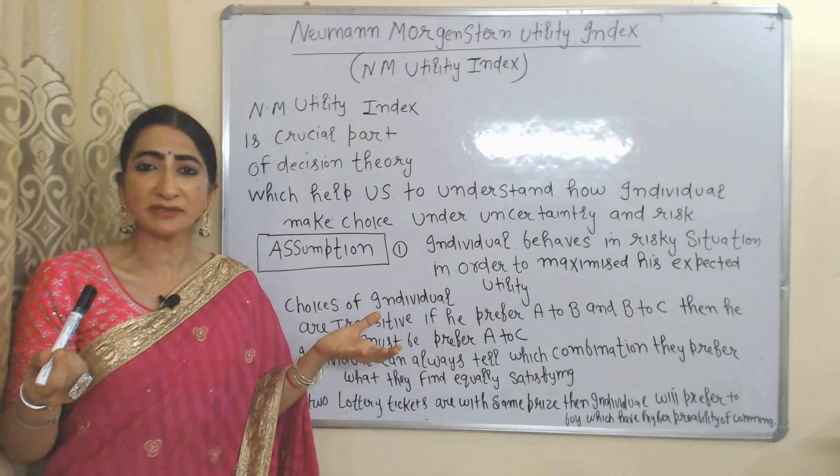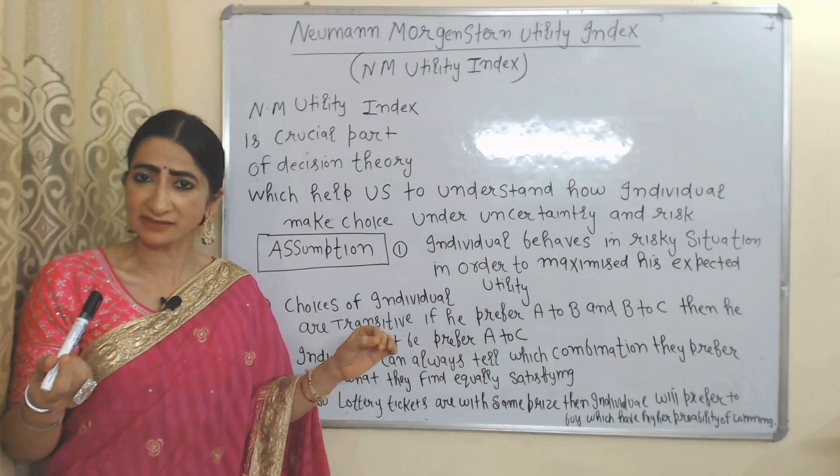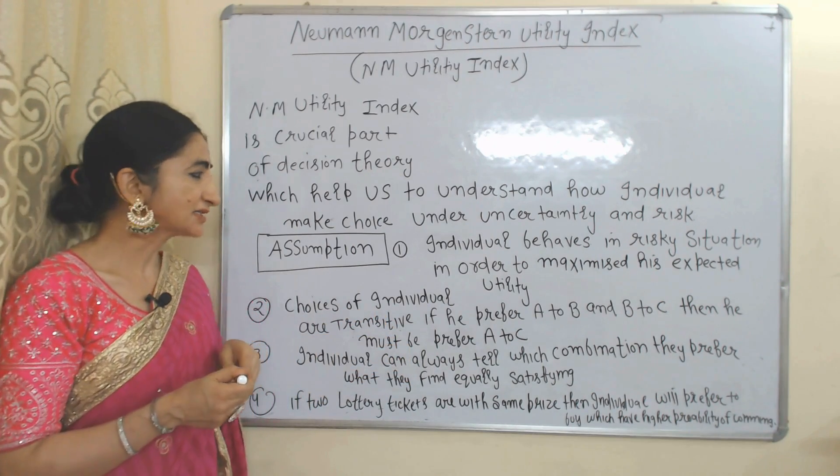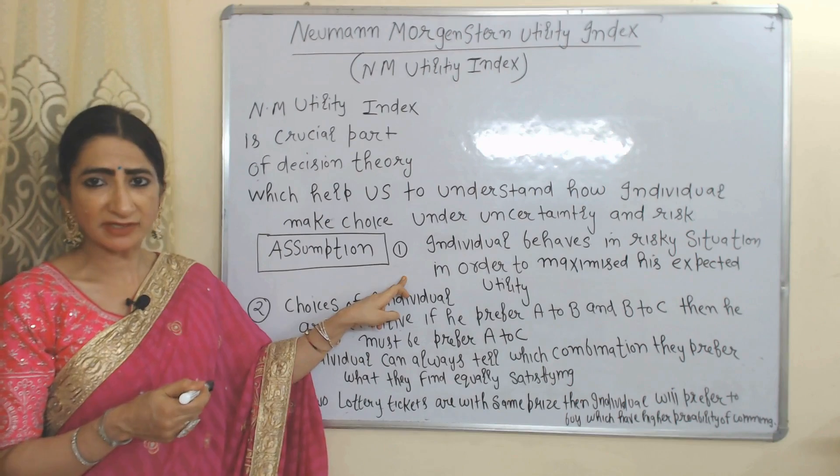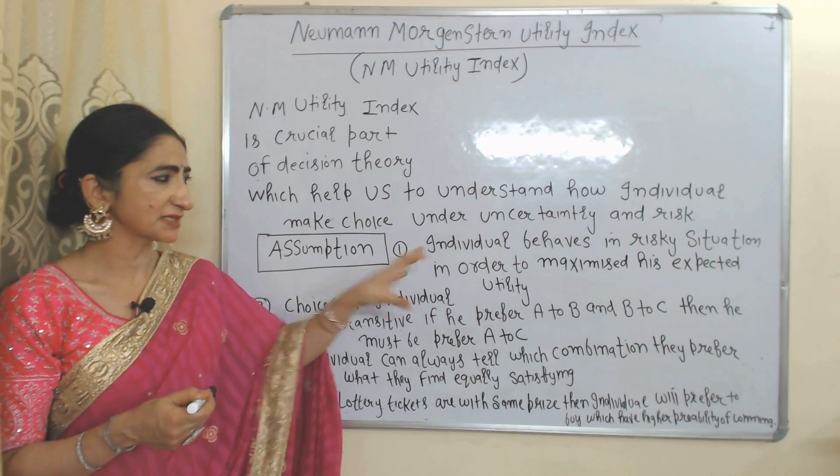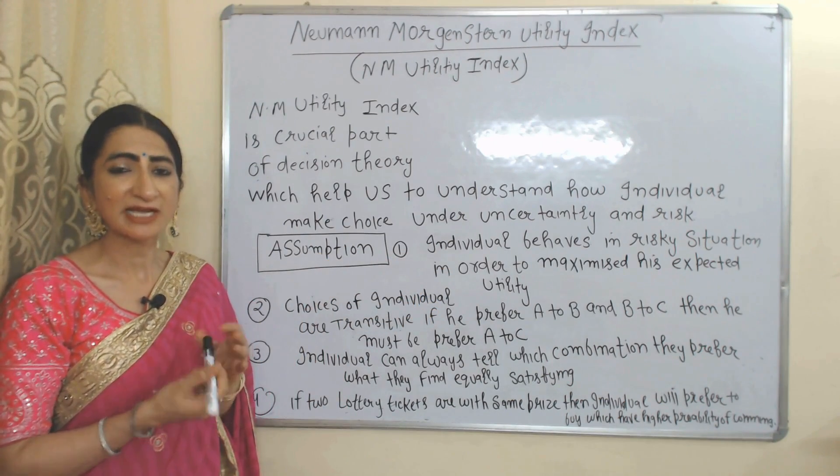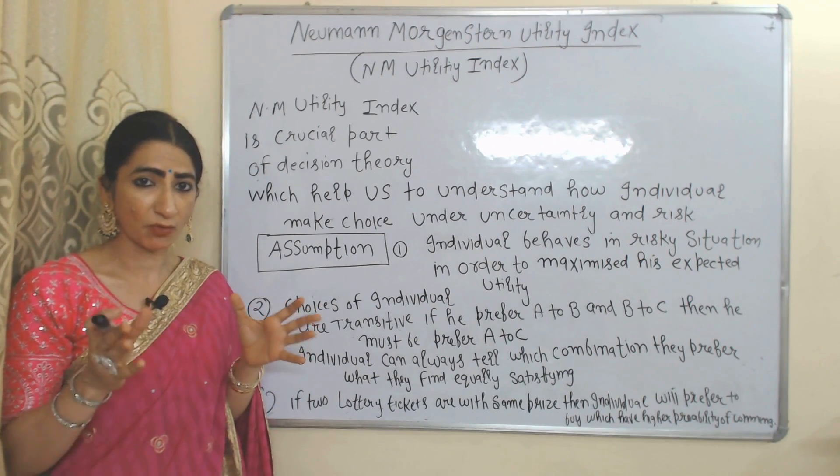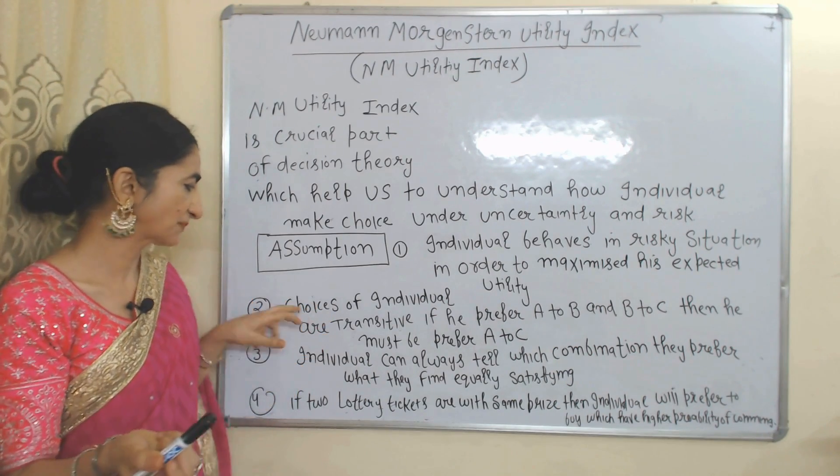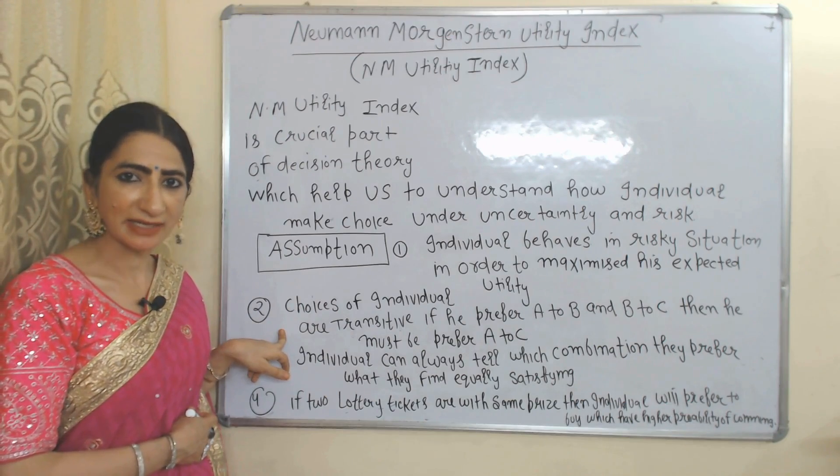NM utility index is a crucial part of decision theory which helps us understand how individuals make choices under uncertainty and risk. Assumption 1: Individuals behave in risky situations in order to maximize their expected utility. That means even in risky situations, individuals want to get maximum satisfaction.